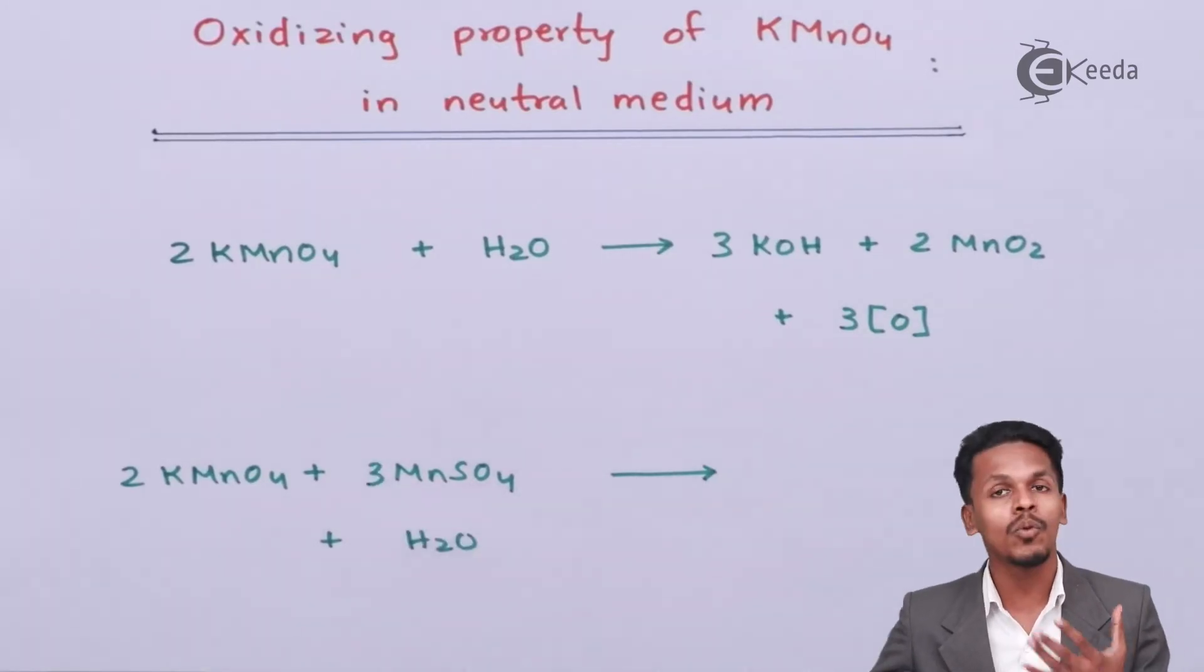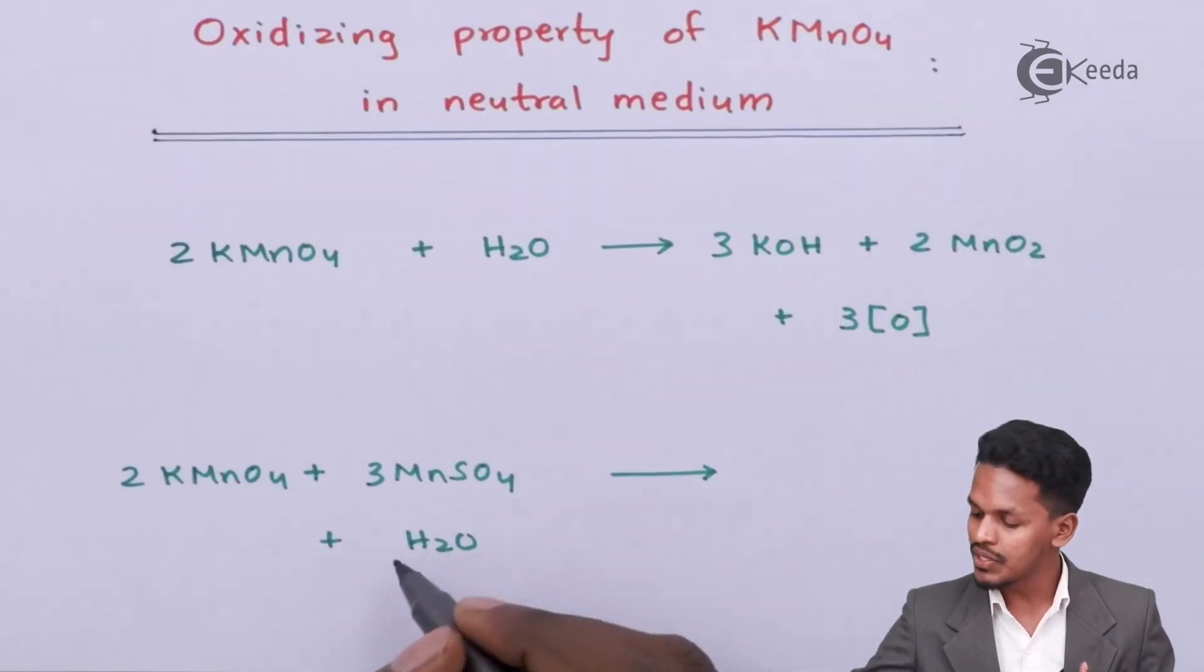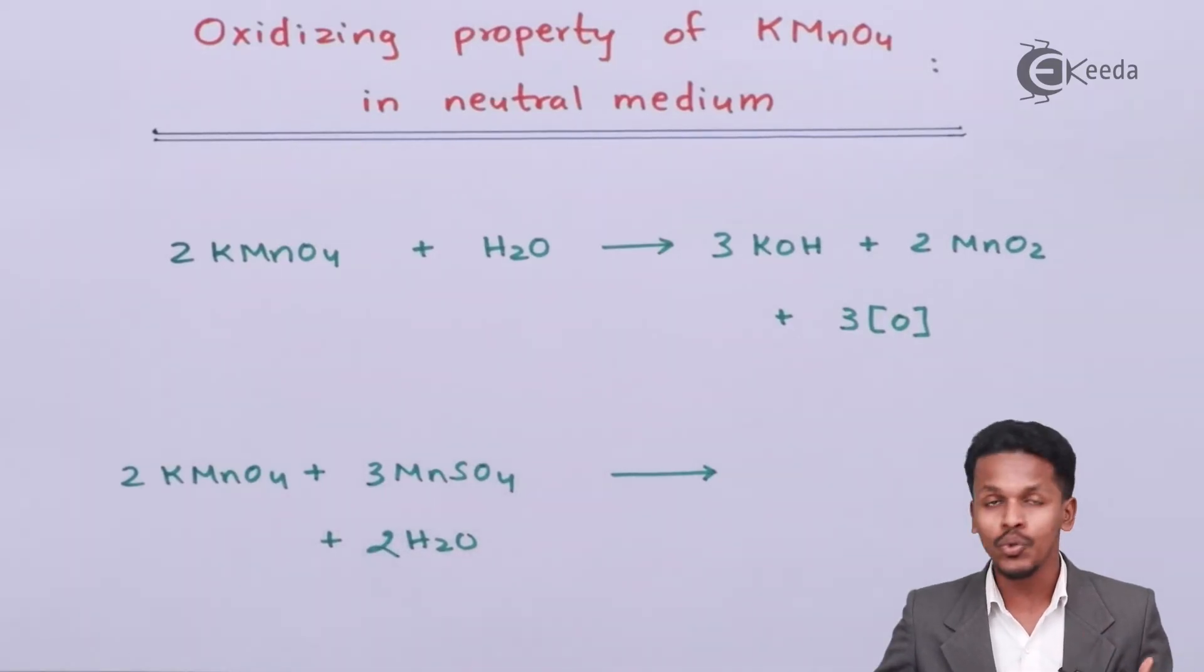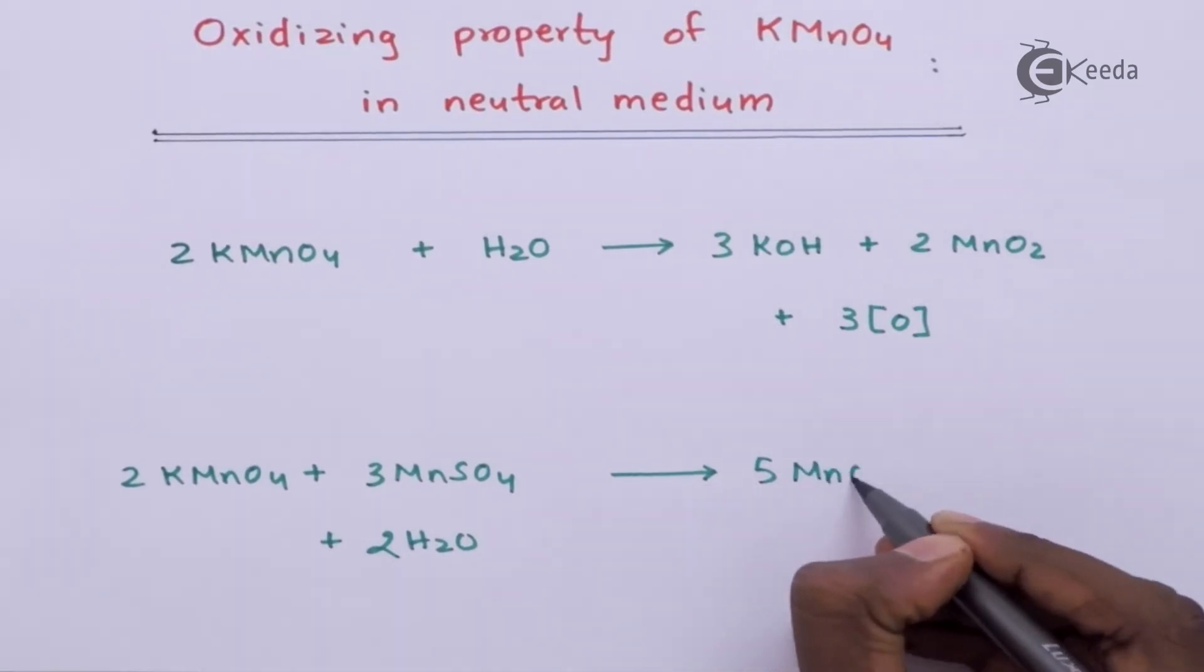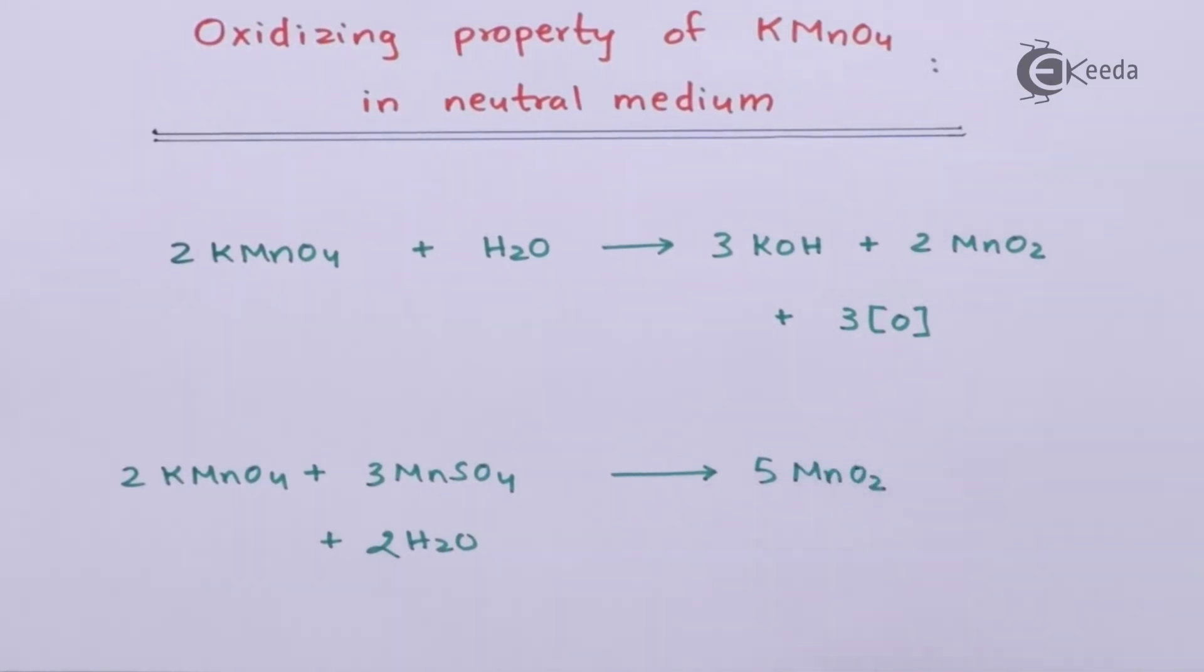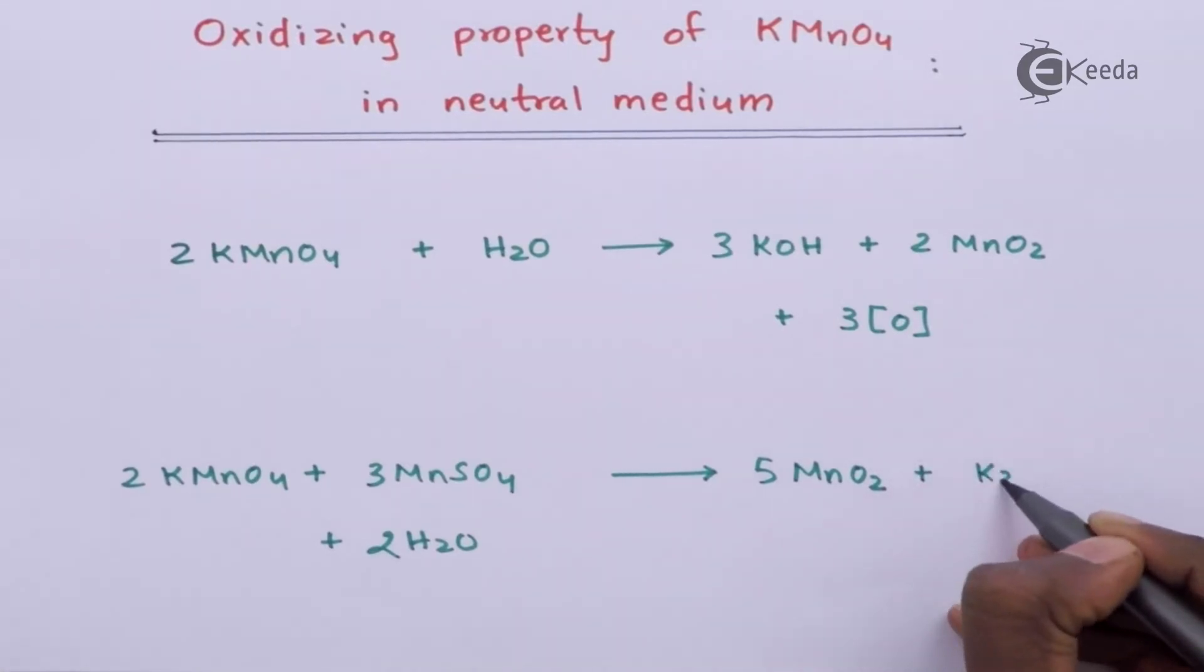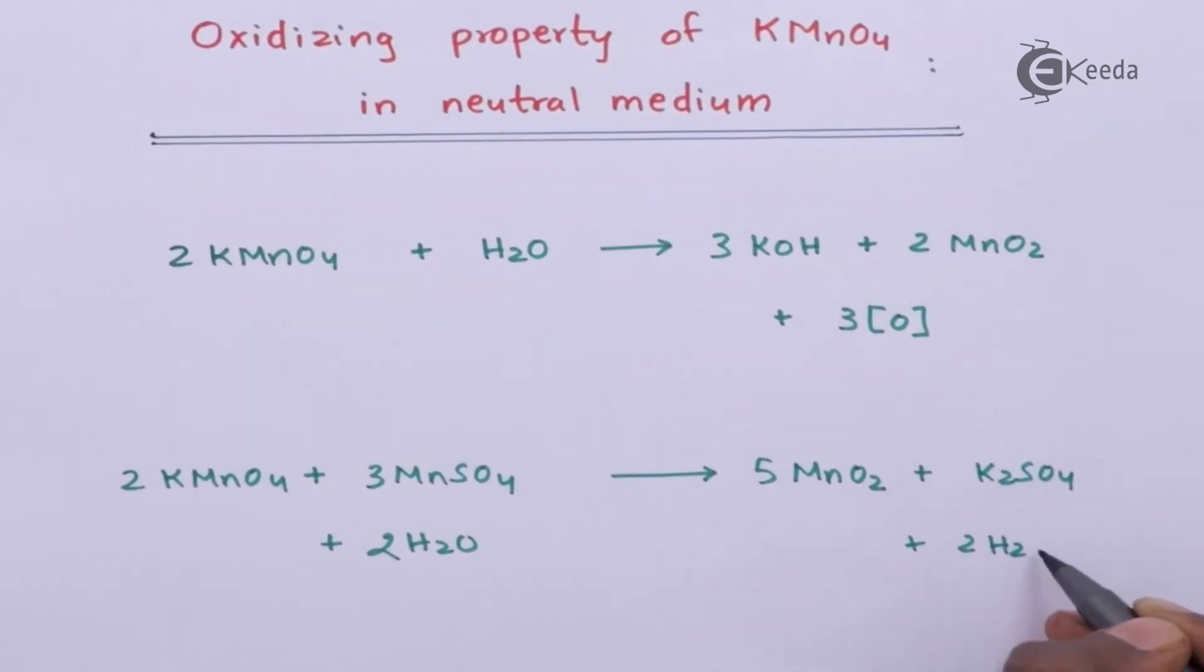This is the condition I have mentioned, so we have to balance the reaction. The balanced reaction will be 3 moles of MnSO4 along with 2 moles of H2O to obtain the byproducts. The main product is 5 moles of MnO2, that is manganese dioxide, along with K2SO4, that is potassium sulfate, and 2 moles of H2SO4.